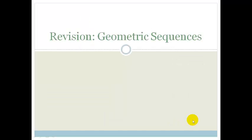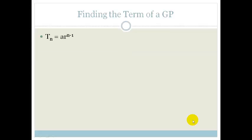We're carrying on with number patterns, but now we're going to be talking about geometric sequences. So let's just revise what we already know about geometric sequences. The general term: Tn is equal to A times r to the power of n minus 1.